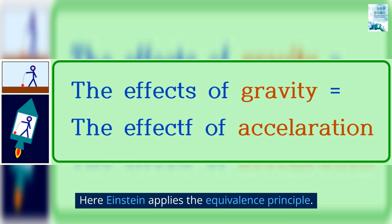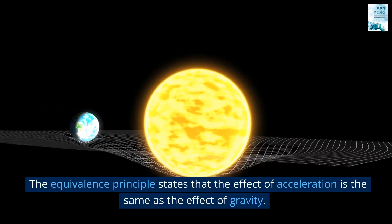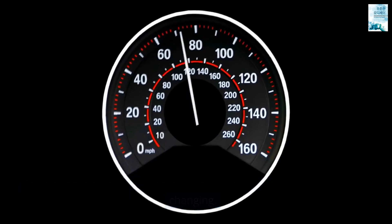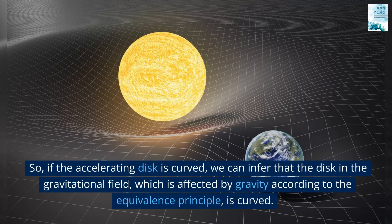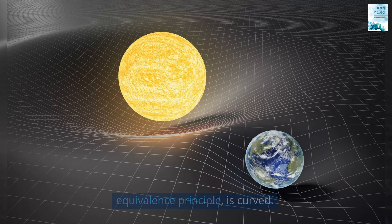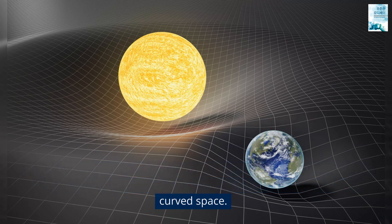Here Einstein applies the equivalence principle. The equivalence principle states that the effect of acceleration is the same as the effect of gravity. So rotation is an acceleration because the direction of the speed keeps changing. So if the accelerating disk is curved, we can infer that the disk in the gravitational field, which is affected by gravity according to the equivalence principle, is curved. In the end, while thinking about how to mathematically express the shape of space affected by the gravitational field, the curved space or the curvature of space, Einstein first imagined a picture of such a curved space.